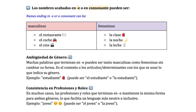Names ending in E or a consonant can be either masculine or feminine. Examples: el restaurante, el coche, el cine. Many words ending in E can be both masculine and feminine without changing their form. It's the context or the articles with which they are used that indicates their gender. For example, the word student can be el estudiante — male student — or la estudiante — female student.